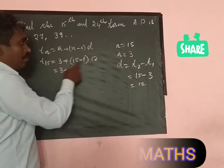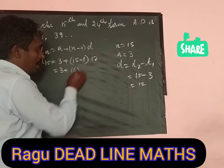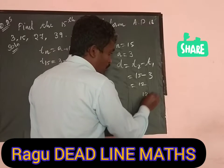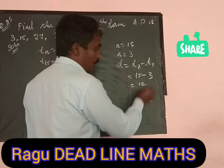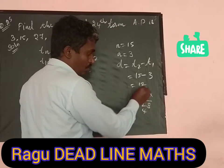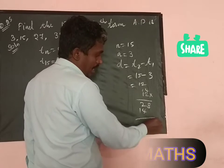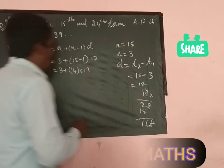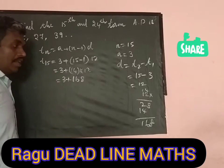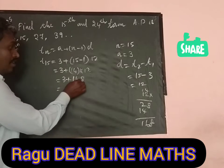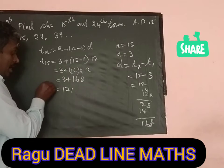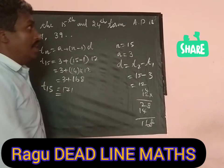15 minus 1 is 14, so 14 × 12 = 168. Therefore t15 = 3 + 168 = 171. The 15th term is 171.